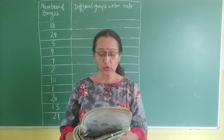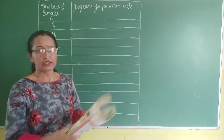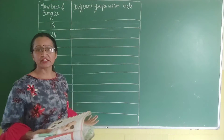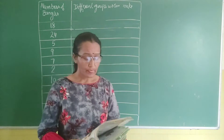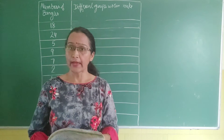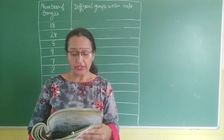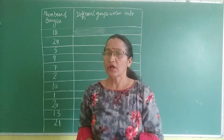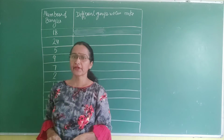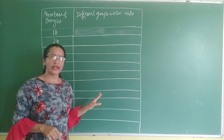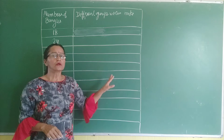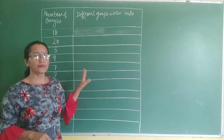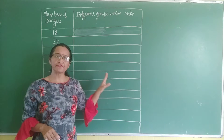Now you have to complete the table. In this book, there is a table given. You have to complete this table for different numbers of bangles. For each number, see what different groups can be made.